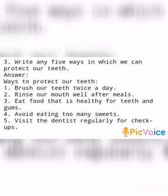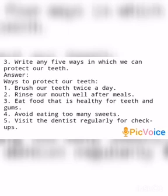Once again repeating: Write any five ways in which we can protect our teeth. First, brush our teeth twice a day. Second, rinse our mouth well after meals. Third, eat food that is healthy for teeth and gums. Fourth, avoid eating too many sweets. Fifth, visit the dentist regularly for check-ups.